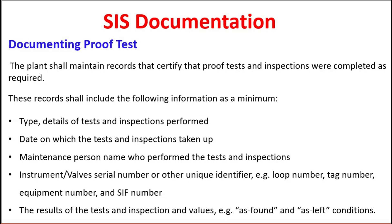These records shall include the following information as a minimum: the type and details of tests and inspections performed; the date on which the tests and inspections were carried out; the name of the person who performed the tests and inspections; and instrument or valve serial numbers or other unique identifiers — for example, loop number, tag number, equipment number, and safety instrumented function number. These requirements may vary according to the geographical location of the company, governmental regulations, and the company's own management directives.